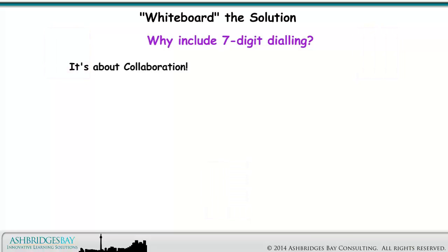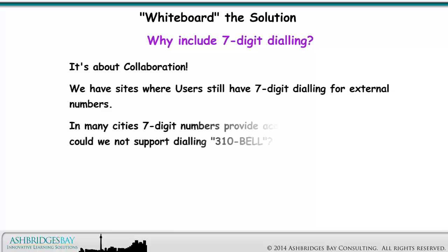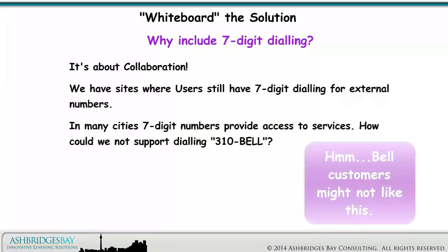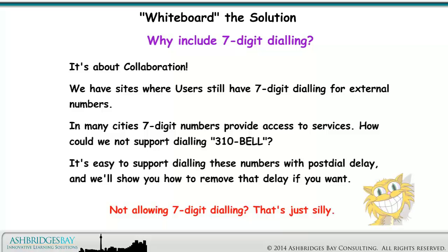It's about collaboration. We have sites where users still have 7-digit dialing for external numbers. In many cities, 7-digit numbers provide access to services. How could we not support dialing 310-BELL? It's easy to support dialing these numbers with post-dial delay, and we'll show you how to remove that delay if you want. Not allowing 7-digit dialing? That's just silly.